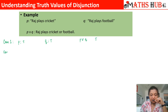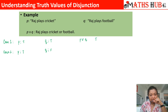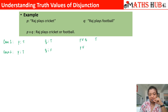Case number 2: P is a true statement and Q is a false statement. Raj plays cricket, but Raj doesn't play football. Our argument was 'or', so we have to select any one. He is playing cricket and we are okay with it. So P or Q will again give us a true result.